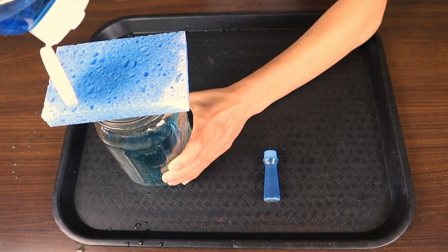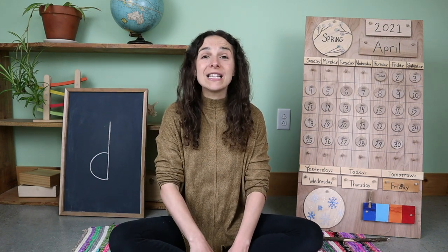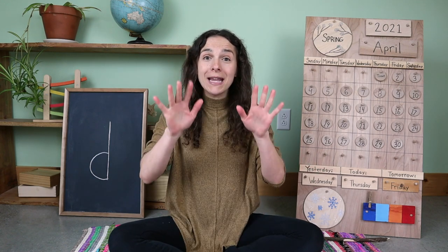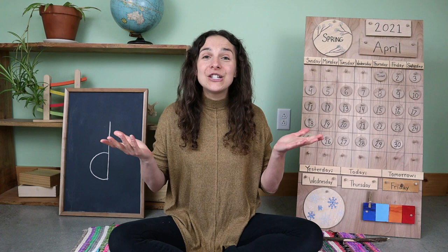Let's get back to circle time. Welcome back, friends. Did you notice what happened to the sponge as it got heavy with water? The water began to drip down from the sponge, just like what happens to a cloud when it rains.